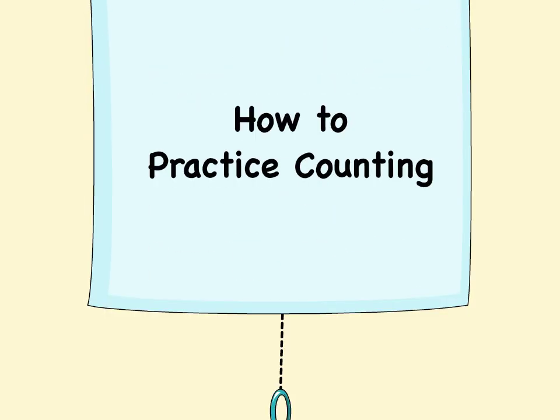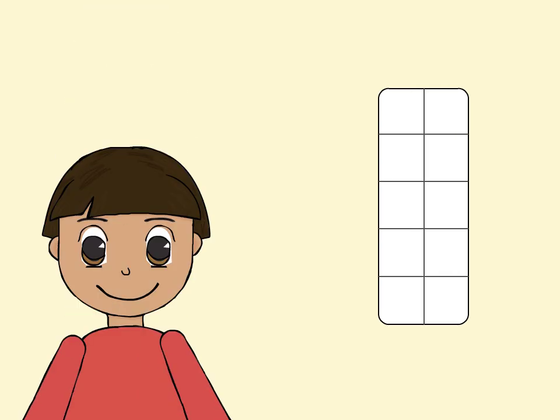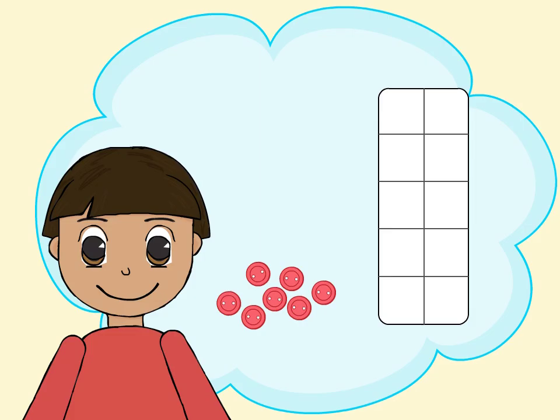To practice counting, first draw a 10-Frame. Make the spaces large enough to put one small object in each window. Give your child a 10-Frame and a small handful of pennies or buttons to count, 10 or fewer to start.